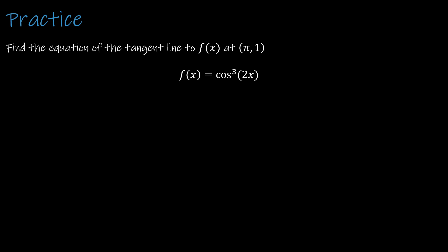Let's finish up with one last practice. This problem asks you to find the derivative of the function, then find the slope and the equation of the tangent line at the point (pi, 1). There are a lot of ways to make mistakes on the derivative of this particular function. So get as far as you can, then press play to see how you did. Note that f of x is really cosine of 2x, quantity cubed.